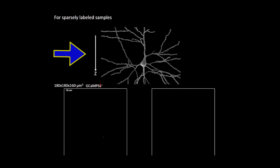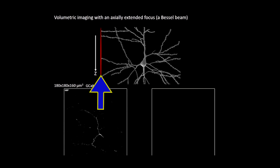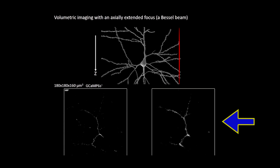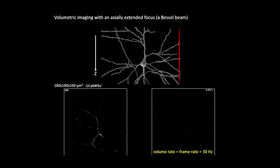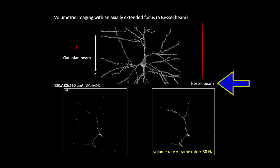This means we actually have a choice, which is especially true for a sparsely labeled sample. You could do the conventional scan, but for a sparsely labeled sample you will spend lots of time looking at nothing. Or you could stretch out your excitation focus so that by scanning it once in two dimensions, you have a projected view of the same volume. The imaging frame rate — in this case 30 frames per second — now becomes your volume rate. Here you are looking at a volume of brain inside an awake behaving mouse, and you can see neurons becoming brighter and dimmer, reflecting their activity.